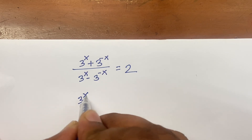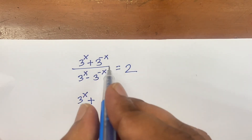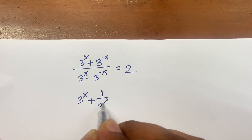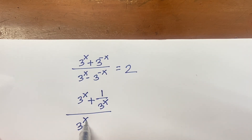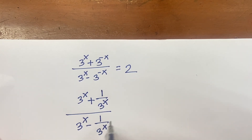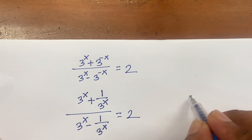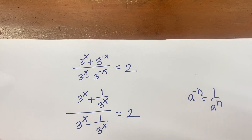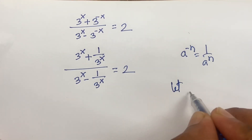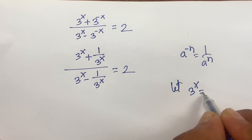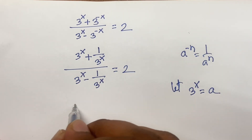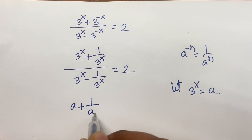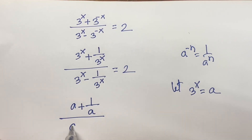Here 3 power minus x is equal to 1 over 3 power x. So we have 3 power x plus 1 over 3 power x, over 3 power x minus 1 over 3 power x, equals 2. We know that a to the power minus n is equal to 1 over a to the power n. Let 3 power x equal to a, so we have a plus 1 over a, over a minus 1 over a, equals 2.